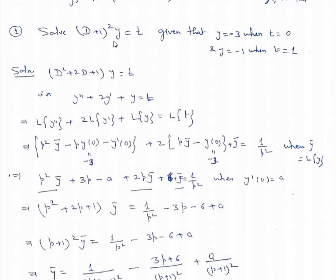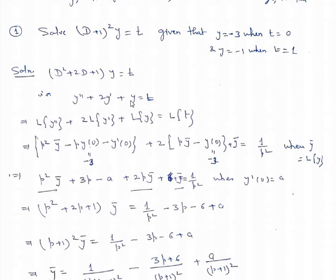Solve (t+1)² y = t, given that y = -3 when t = 0 and y = -1 when t = 1. Now this equation can be written as (D² + 2D + 1)y = t, that means y'' + 2y' + y = t.